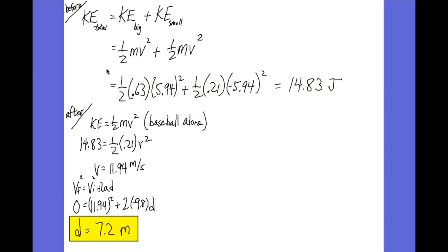Now let's find how high the baseball goes. Since it's an elastic collision, kinetic energy is conserved. Before the collision, both balls move at 5.94 m/s — the baseball is 210 grams and the basketball is 630 grams — giving a total kinetic energy of 14.83 joules. After the collision, all that energy is with the baseball alone. Solving for the baseball's velocity gives 11.94 m/s, and using equations of motion, it will reach a height of 7.2 meters — over 25 feet — just from dropping from about shoulder level.